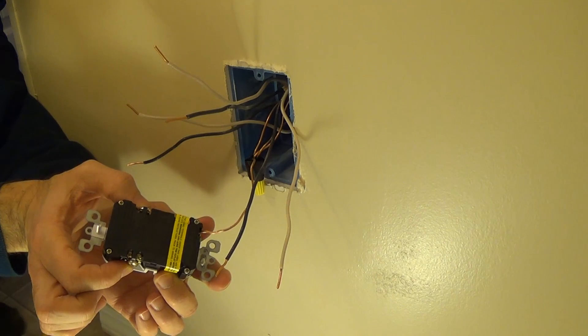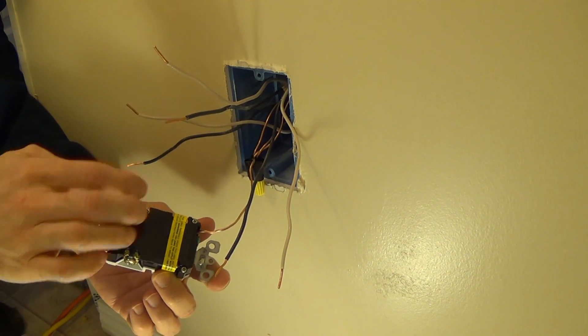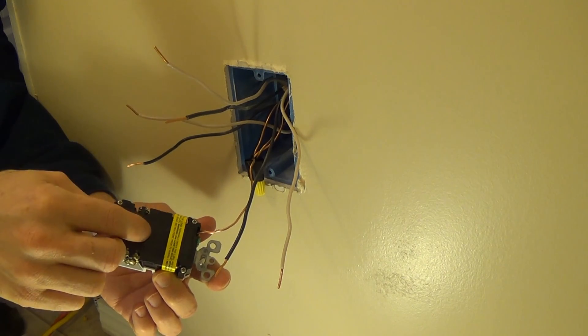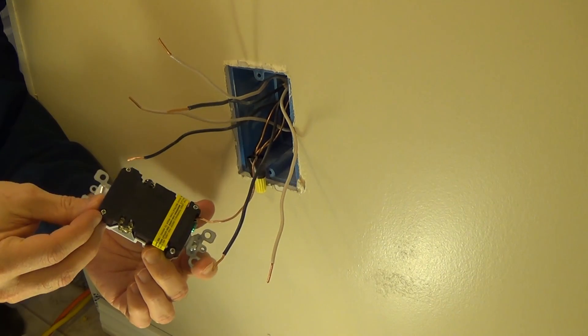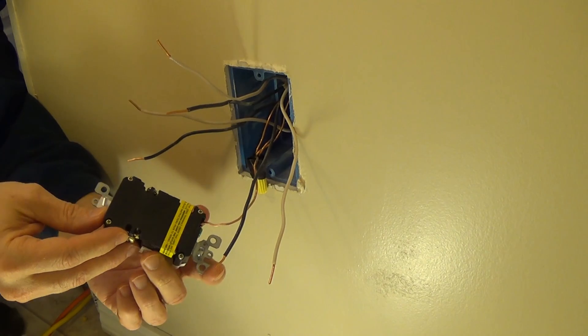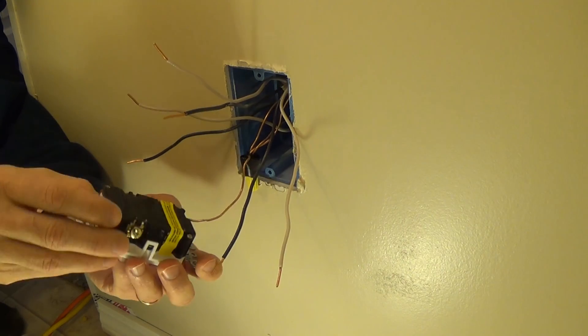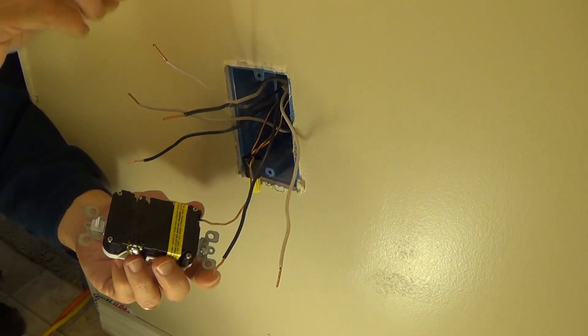These here are the power ones, the line loads. You have to make sure you put them in the correct location because if you reverse them, the outlet will still work but it won't act as a fault protector. So it won't actually do what this expensive little plug is supposed to be doing.